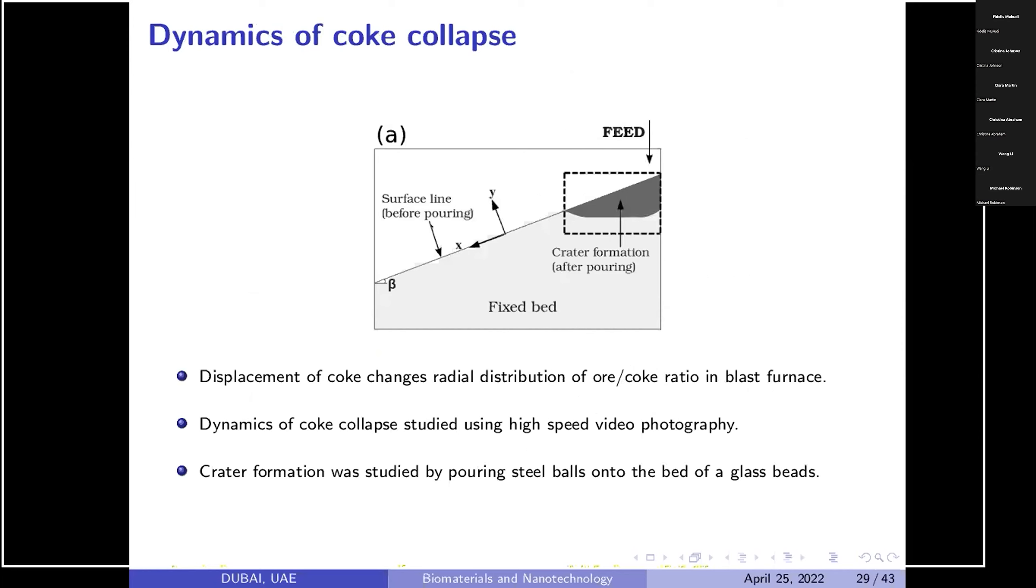What we have done is we have prepared a base of fixed particles of glass beads whose density is 2.5 gram per cc and then poured the large particles of stainless steel whose density is 8 gram per cc. Why we have taken steel balls and glass beads? Because coke density is almost 2.5 gram per cc or 2 to 3 gram per cc and steel balls are 8. So just to mimic what happens in blast furnace, we have used this. The main objective was to find out how much the crater formation or displacement was present.